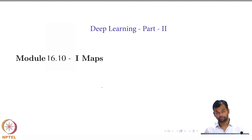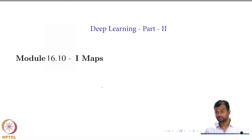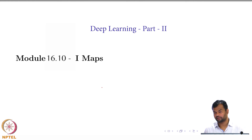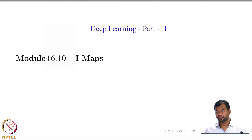Today we will move on to something known as IMAPs, and that is the last topic that we will do in directed graphical models or Bayesian networks. Directed and undirected graphical models are a separate course in the department, so I am going to cover the bare minimum that we need to reach our eventual goal, which is RBMs.